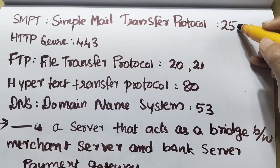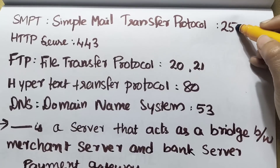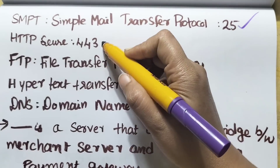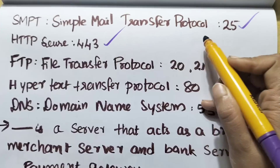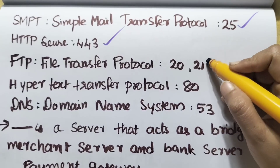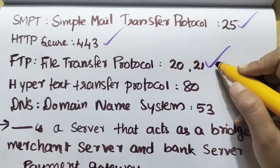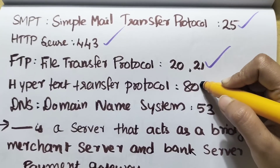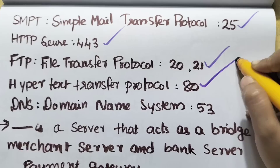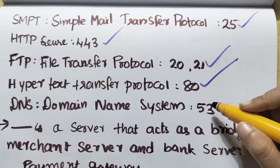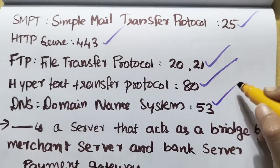Port numbers: HTTPS uses port 443, FTP uses ports 20 and 21, and HTTP uses port 80. DNS (Domain Name System) uses port 53.